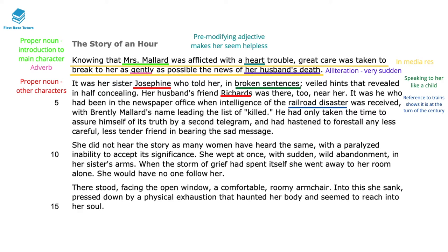The reference to the railroad disaster sets us in the time the story was written — 1800s America, with much more rudimentary trains. There is a cataphoric reference made to Brentley Mallard: anaphora is when a main subject is repeatedly reinforced, whereas cataphoric reference is when we learn about a character indirectly before their identity is revealed later. Richards had hastened — he was very quick to act — and the comparative adjective 'less careful' emphasises how gingerly they approach Mrs Mallard, believing she's just too weak to take on this information.